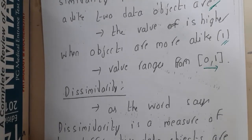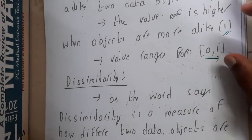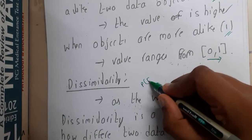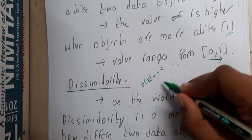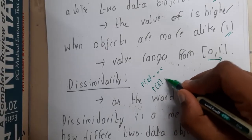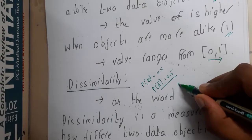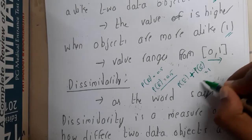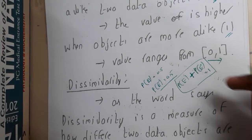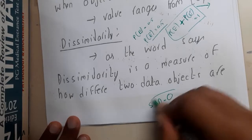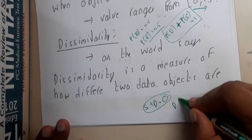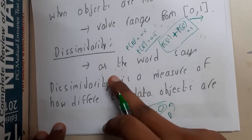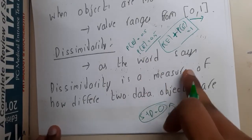Dissimilarity is the opposite of similarity. In probability, if the probability of occurrence of E is 0.5, then the probability of non-occurrence of E is also 0.5, because probability of occurrence plus probability of non-occurrence equals one. In the same way, similarity plus dissimilarity equals one — so if you know the dissimilarity value you can calculate similarity, and vice versa.